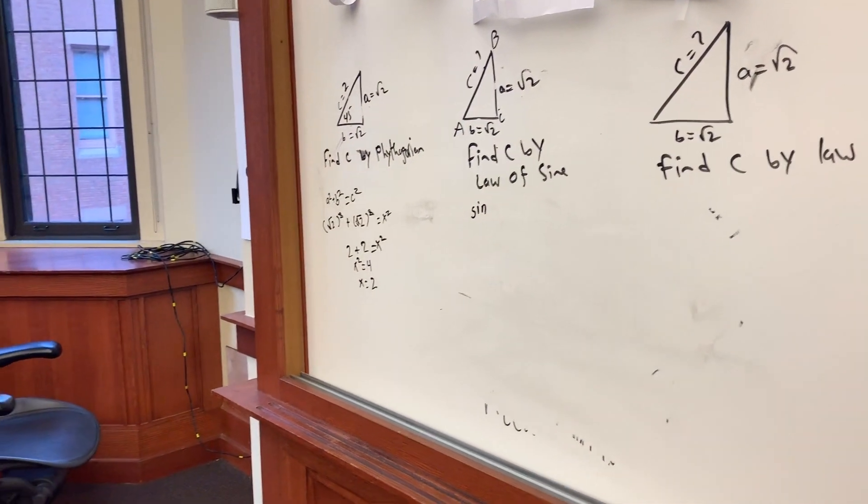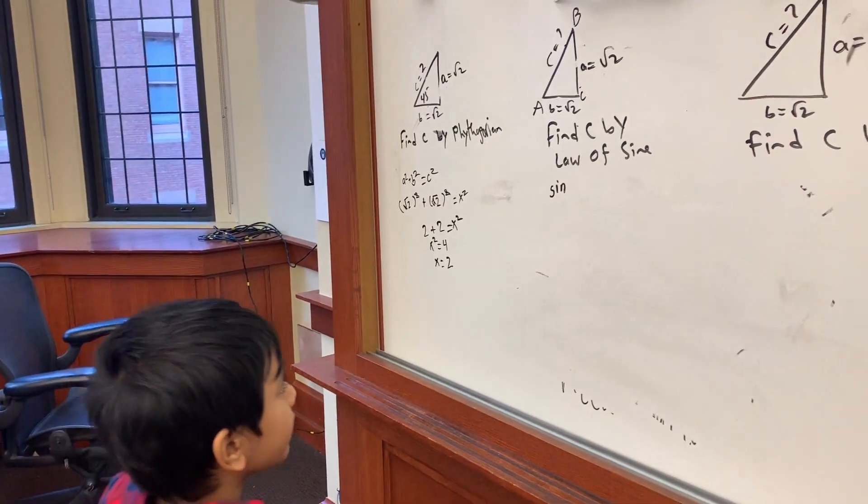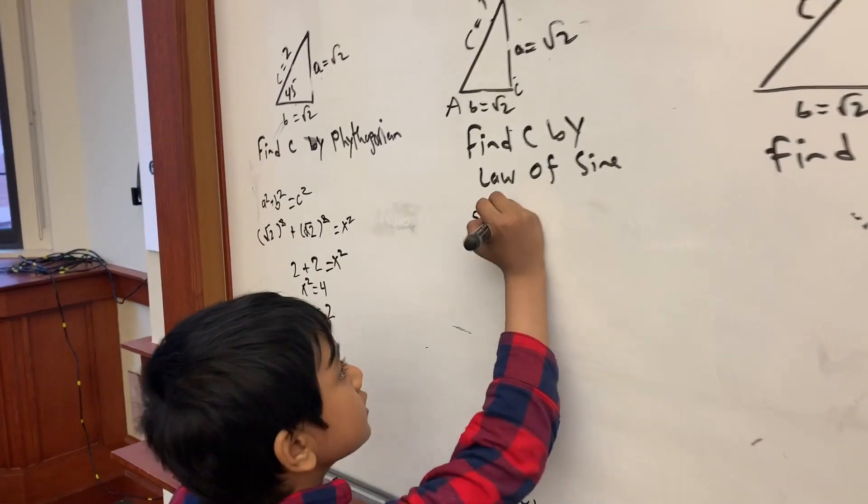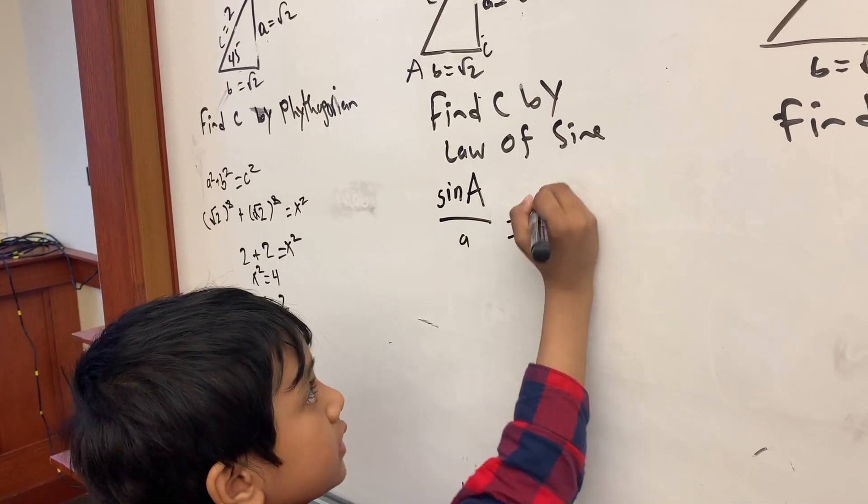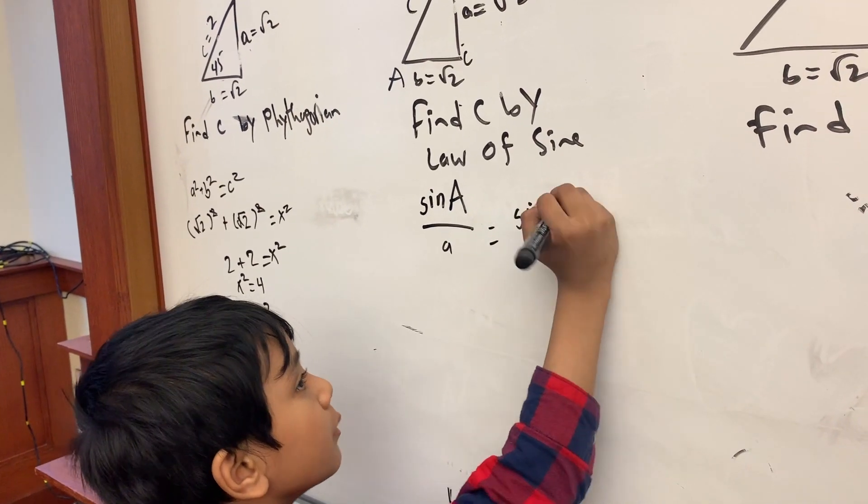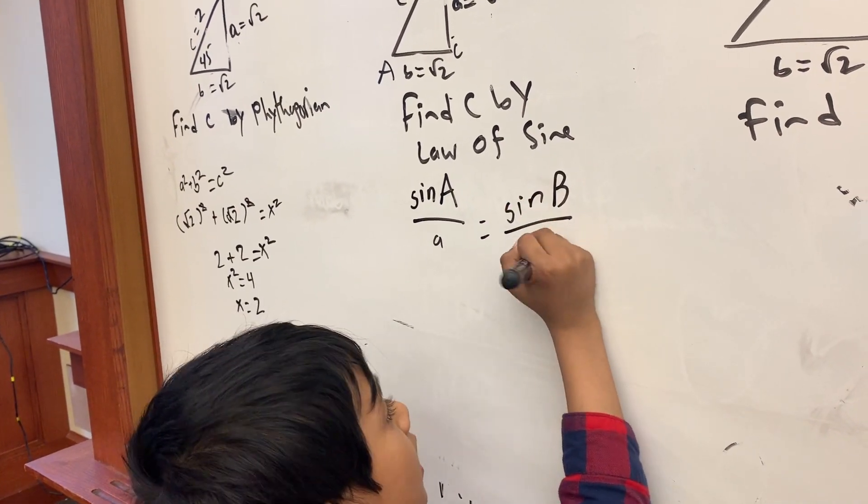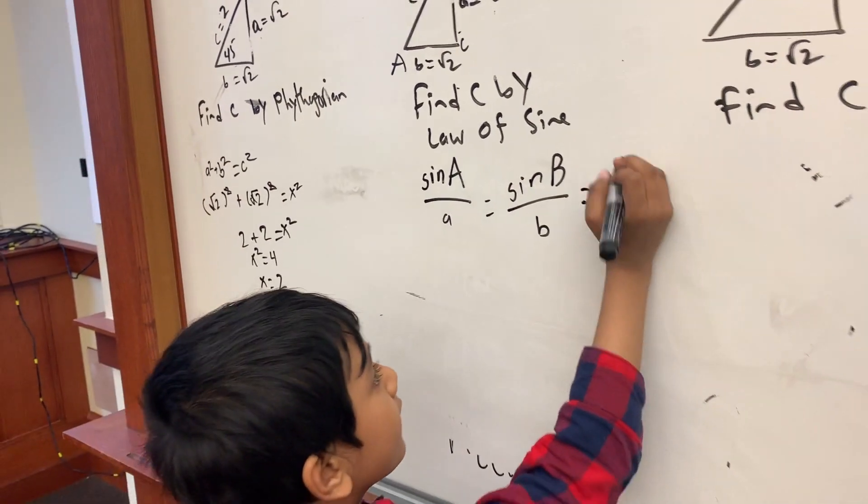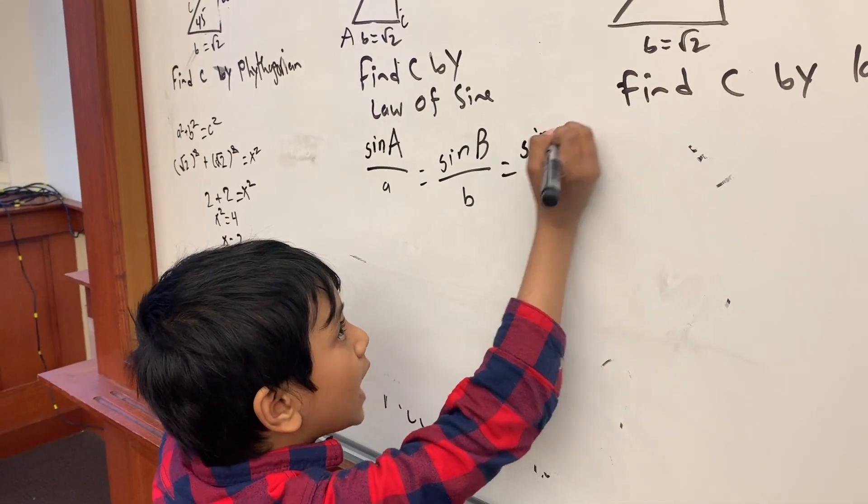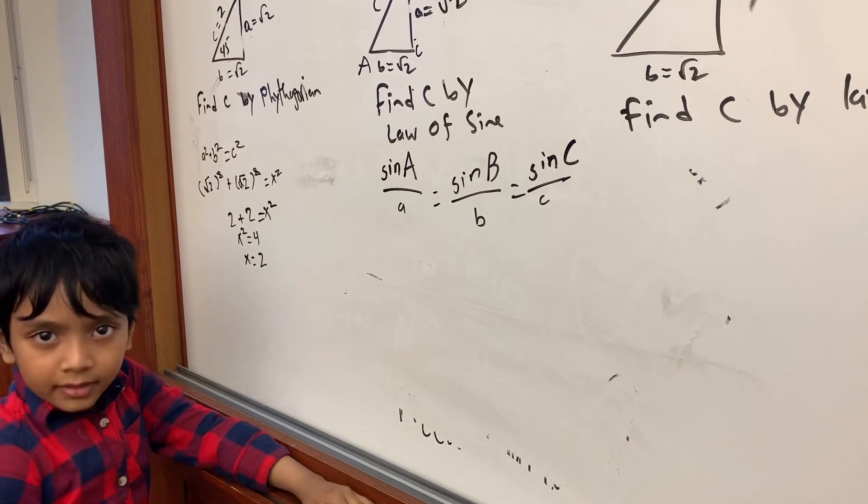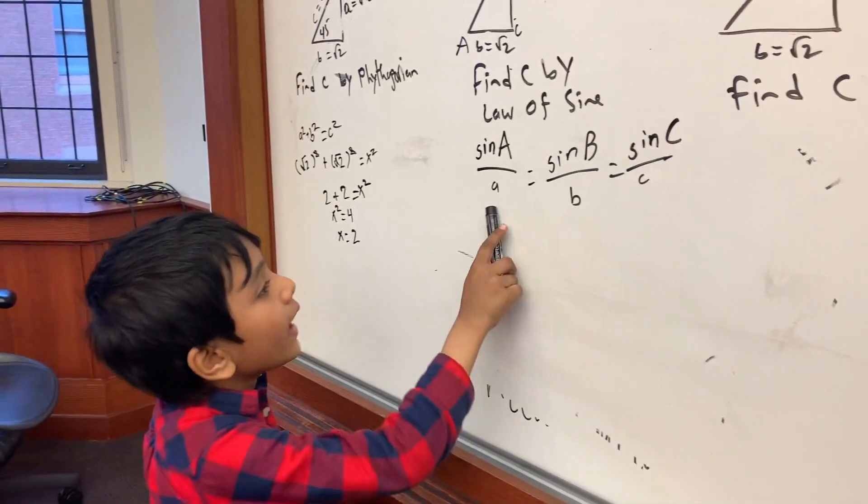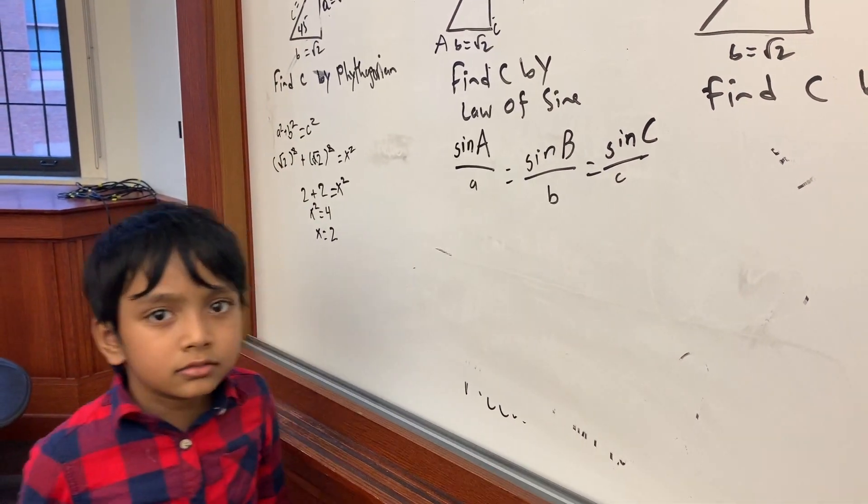So let's find C by the law of sine. So sine capital A over lowercase a equals sine capital B over lowercase b equals sine capital C over lowercase c. And we can cancel out either one of these.